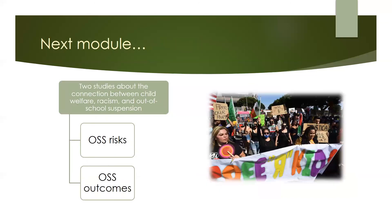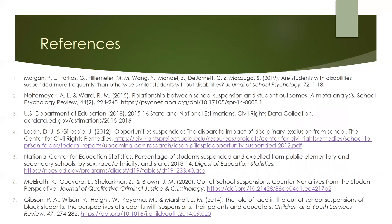In this module, we talked about some of the risks and outcomes for out-of-school suspension. In the next module, we'll be going more in-depth about those risks and outcomes with two studies. You might have been wondering whether the risk factors like disability, BIPOC identity, and child welfare system involvement intersect in the ways that they affect out-of-school suspension—for example, do BIPOC students who are involved in child welfare have increased risks of out-of-school suspension beyond those of BIPOC students not involved in the child welfare system? That is a question we sought to answer in our out-of-school suspension risk study, which we will discuss in the next module. We will also explore whether child welfare-involved students, BIPOC students, and students with disabilities are more likely to experience the negative outcomes of suspension. Join us in Module 2 for a deeper dive into those questions. And here are our references. Thank you very much!